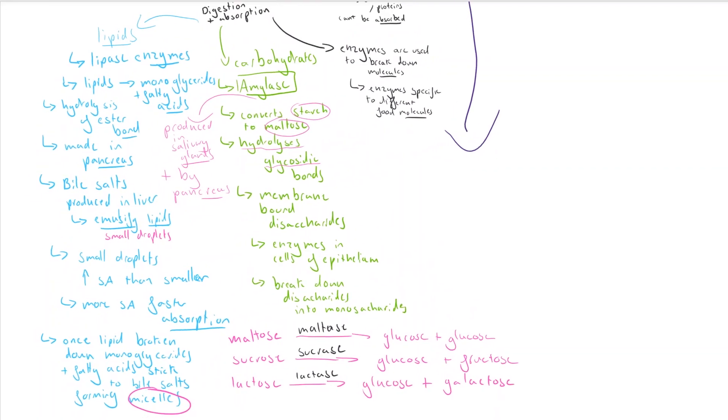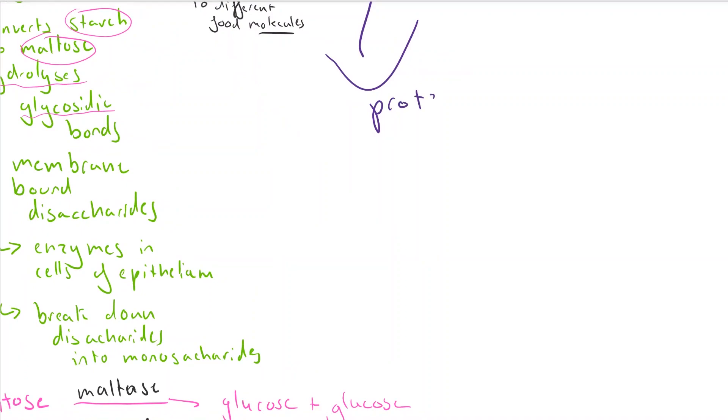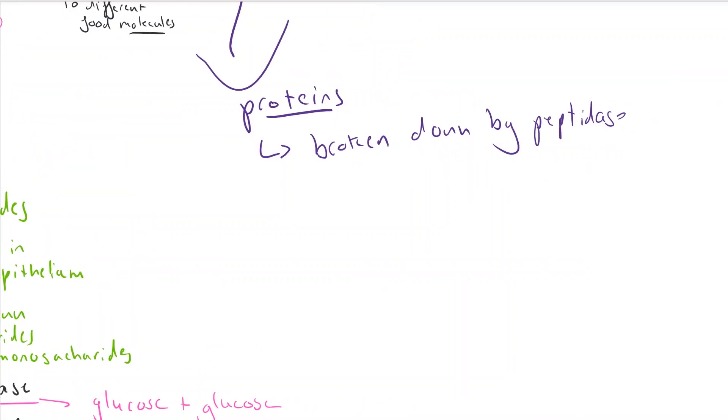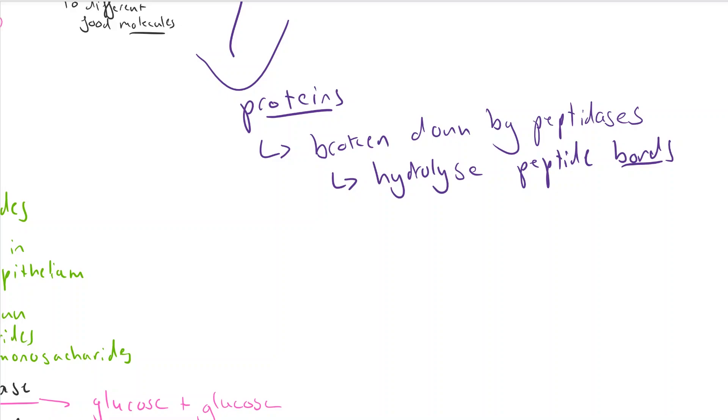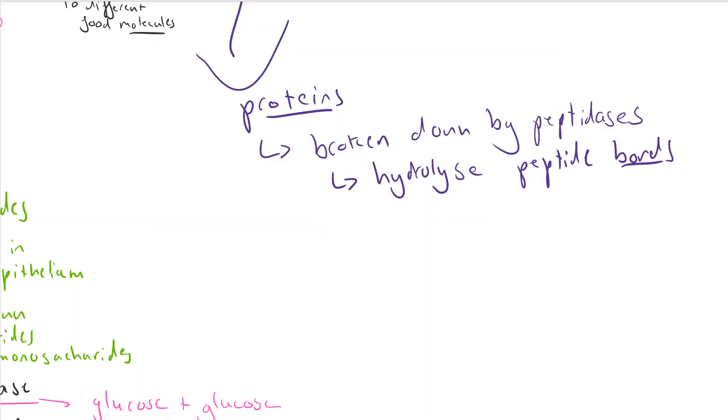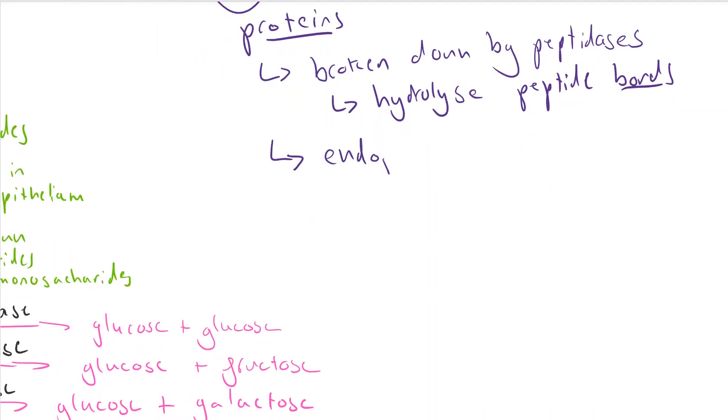Finally, we're going to look at the third of the big three large molecules, and that's proteins. Proteins are broken down by a combination of proteases or peptidases, the two types of enzymes that break down proteins. They convert proteins into amino acids by hydrolyzing the peptide bonds between them. There are two types of enzymes that we need to know about for proteins: endopeptidases and exopeptidases.